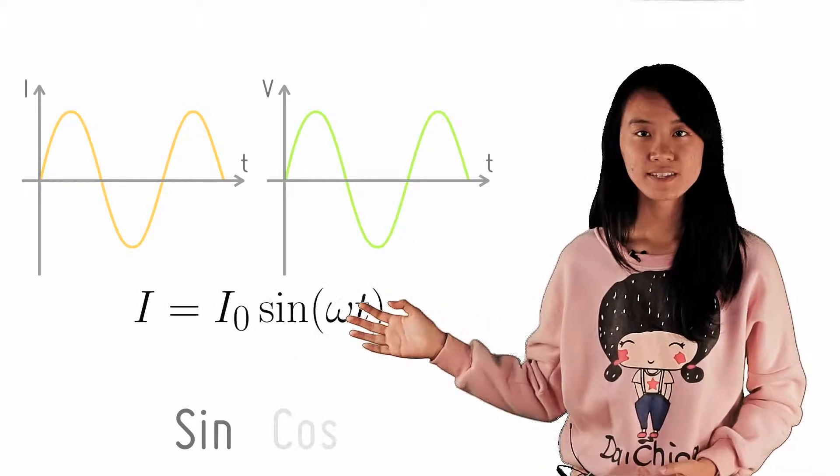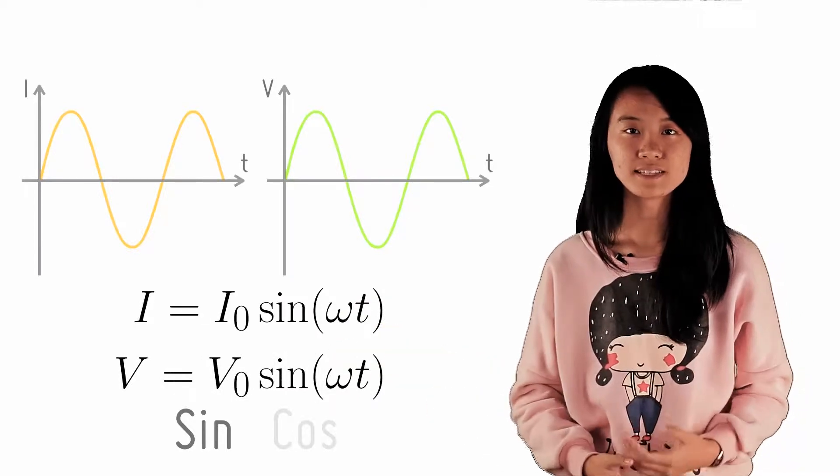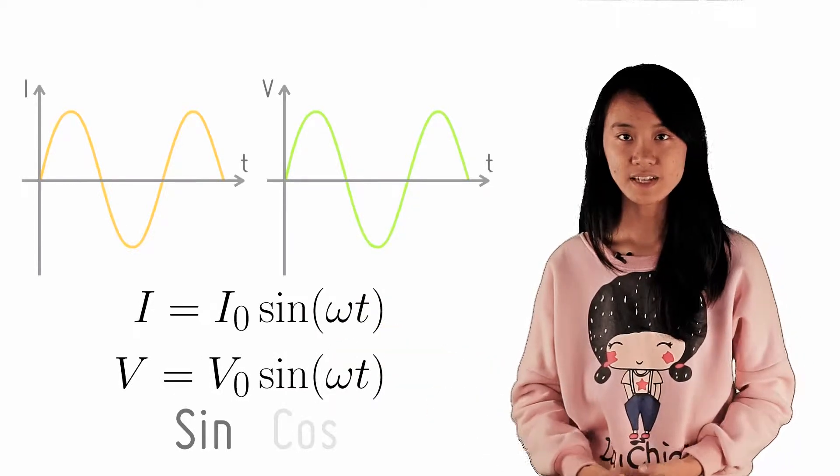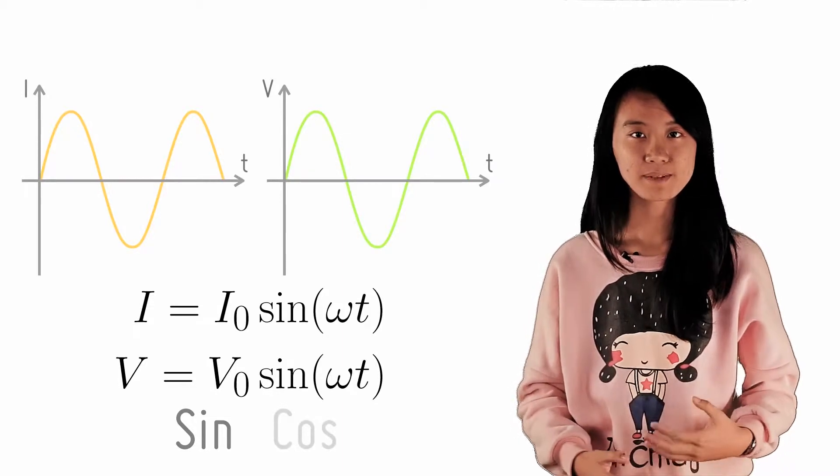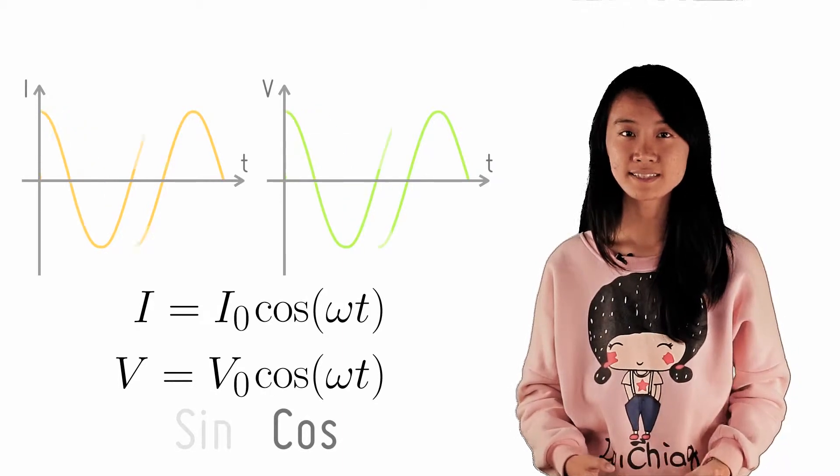For a sine graph, the current is I0sin(ωt) and voltage V is V0sin(ωt). Alternatively, it can be represented by a cosine graph by replacing the sine with cosine.